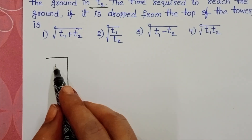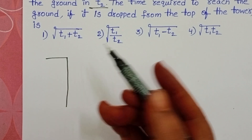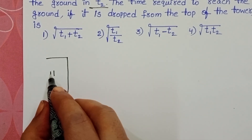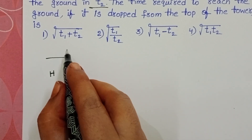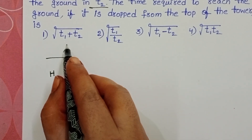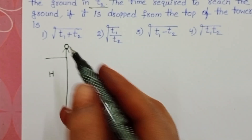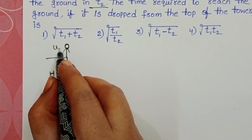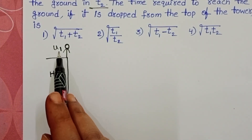In the given question, a body is projected from a tower. Let us take the height of this tower as H. Initially, a body is projected in the upward direction. Let us take the speed of the body as U. So the initial speed of the body is U.